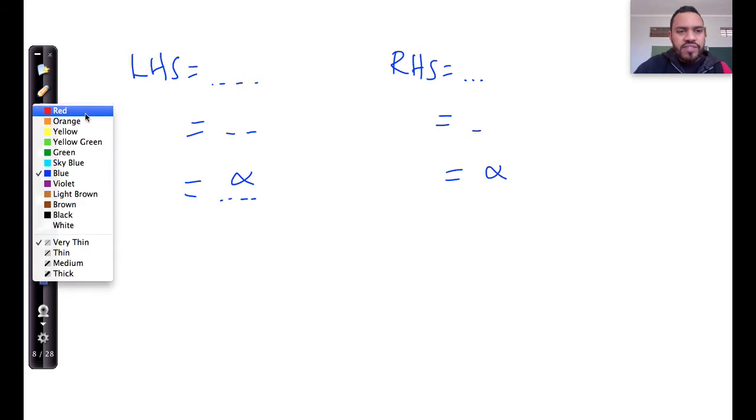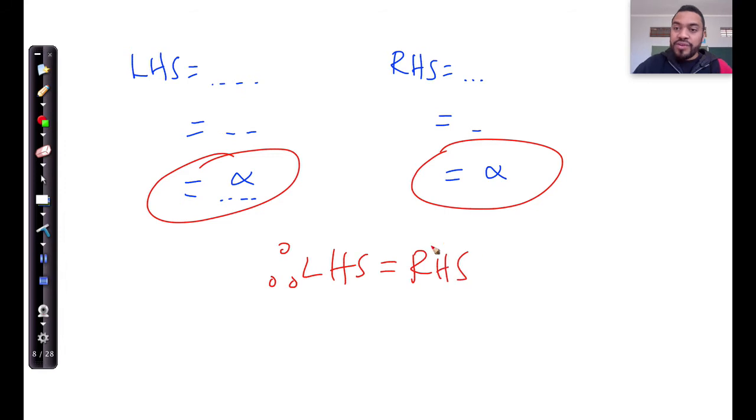And if you get stuck at the same point, such that you've shown that the left-hand side is equal to alpha, and the right-hand side is also equal to alpha, then you can conclude that the left-hand side is equal to the right-hand side. So that's one of the appropriate strategies.